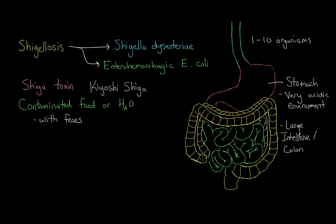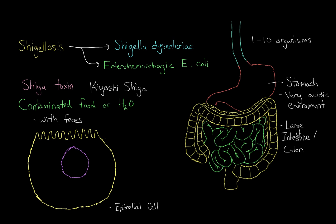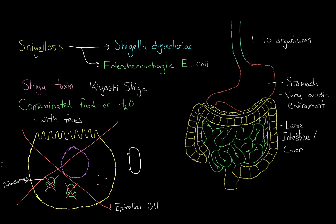The large intestine is mostly responsible for absorbing water, and you have a whole bunch of epithelial cells lining it that perform this function. The bacteria will have the Shiga toxin associated with its cell wall, and that Shiga toxin will then enter the epithelial cell. In all eukaryotic cells in the human body, you have organelles called ribosomes that are responsible for synthesizing proteins — but the Shiga toxin will stop them from doing that, so the ribosomes are no longer able to produce any proteins.